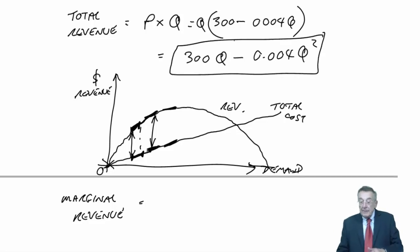And 300Q, you multiply by the power and drop the power by one, it differentiates to 300 minus, multiply by the power, so 2 times 0.004 is 0.008. Drop the power by one Q.